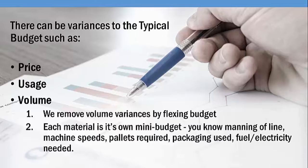Finally, volume variance. This is the difference in spending that may actually overlap with usage and price, caused by making more or less of the product than we anticipated.